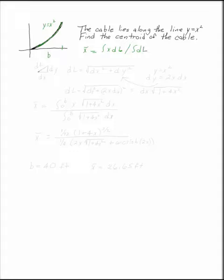For any little tiny bit of cable, dl, we can think about this as dx dy. This is so that by the Pythagorean theorem, dl is the square root of dx squared plus dy squared.